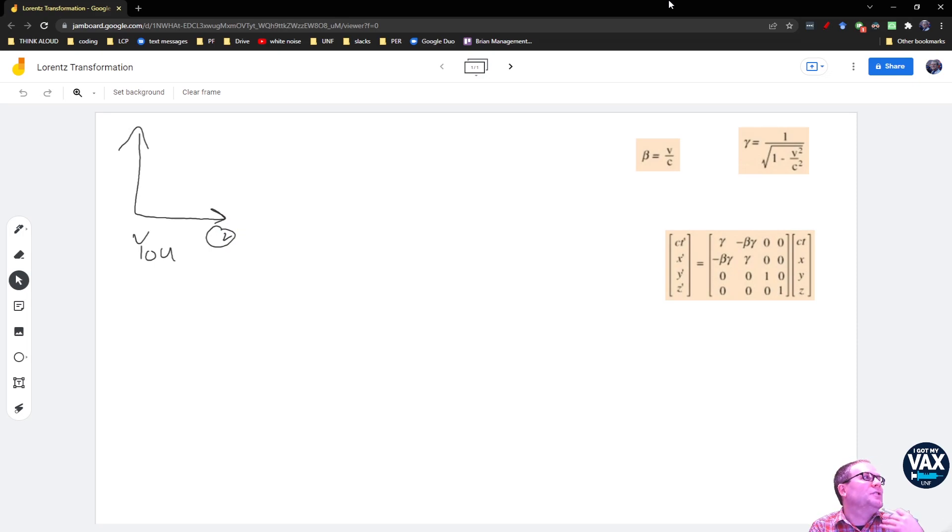So you imagine that everybody in the universe has their own set of rulers at right angles and a clock that they're going around with measuring. I mean that's what we do inside of our heads. We have an idea of where things are in terms of distance and in terms of direction. And we have an idea of when they're happening now, later, much later, etc.